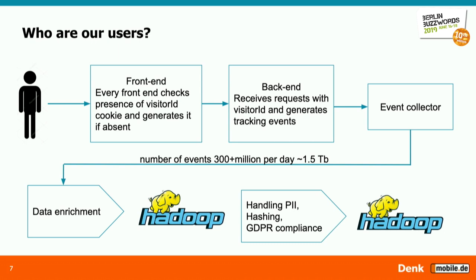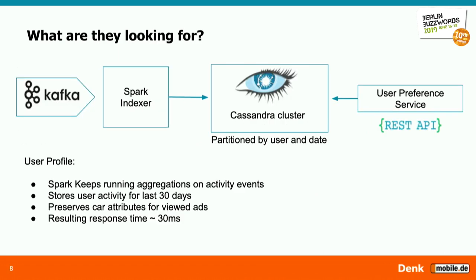With all that data, we needed to understand what users were looking for. We created a microservice that stores aggregate user activities daily for the last 30 days in Cassandra. When this API is called — for example by our search platform — the profile returned includes preferences for continuous features like price and mileage distributions, as well as more categorical information: what makes and models they look at, and fuel types.